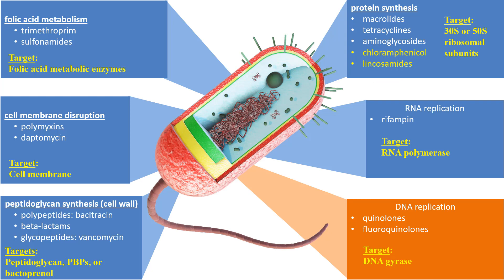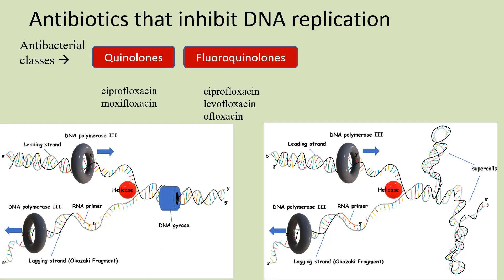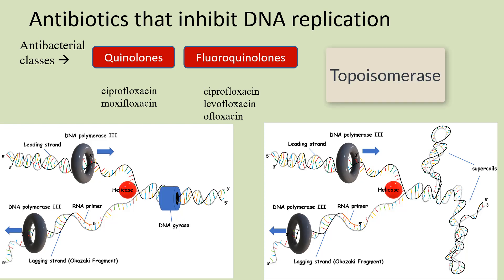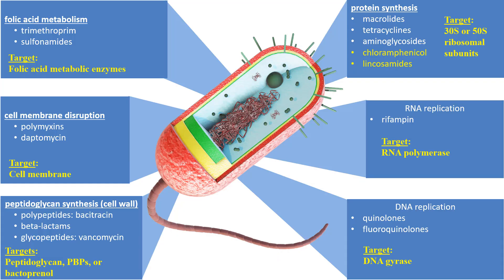The last mode of action is that of DNA replication, and the target here is DNA gyrase. Helicase is an enzyme that unwinds double-stranded DNA during DNA replication, which leads to supercoiling. In order for the DNA to be relaxed, DNA gyrase needs to unwind the supercoils to allow helicase to continue opening up the double-stranded DNA and continue DNA replication. Eukaryotic cells have a molecule similar to DNA gyrase called topoisomerase, but because they are different proteins, quinolones and fluoroquinolones specifically target DNA gyrase and prevent it from functioning. This covers the six modes of action that antibacterial agents use to kill or inhibit bacterial growth, and thus concludes this video.